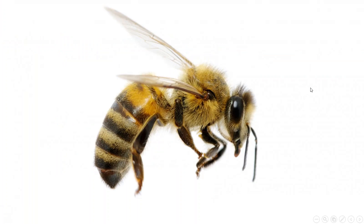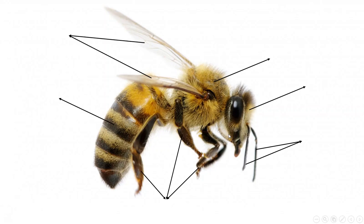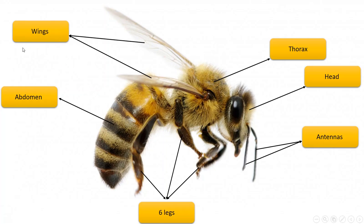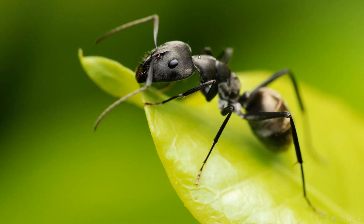We will now learn the body parts of an insect. All insects have three main body parts: the head, the thorax — which is the middle part — and the abdomen. Additionally, all insects have six legs and two antennas, but many of them also have wings. Not all of them have wings. Like this bee, it has wings, but the ant does not have any wings.